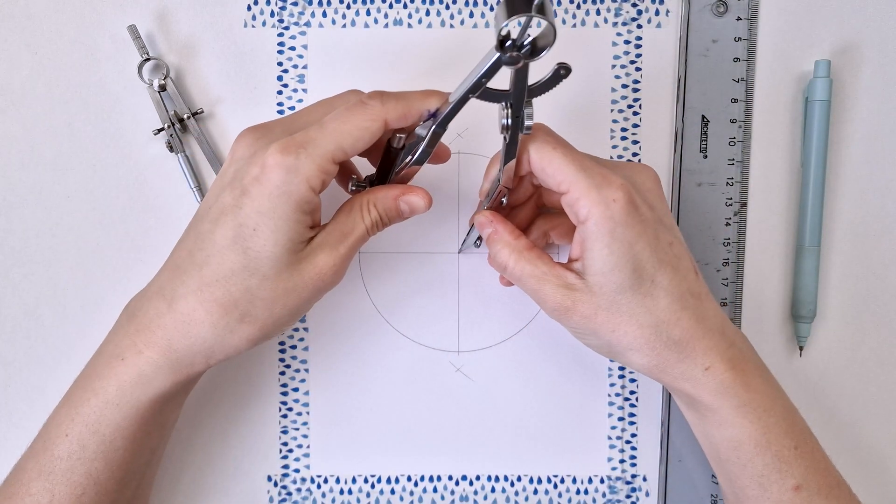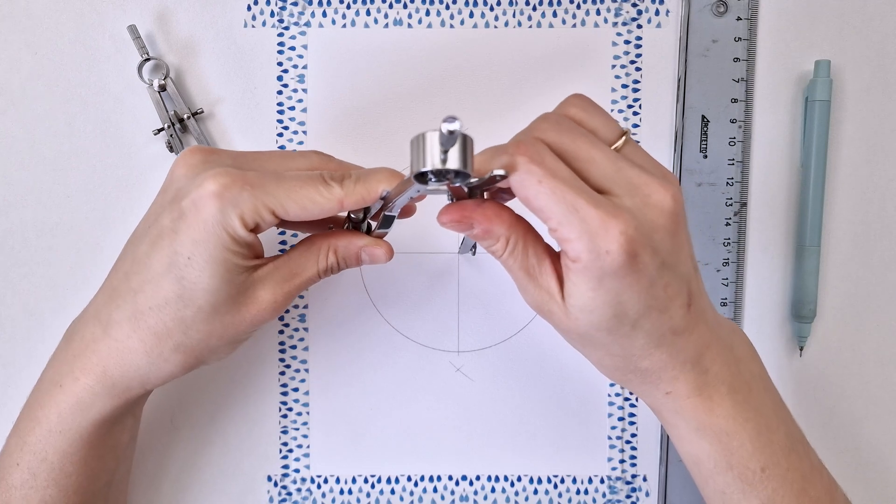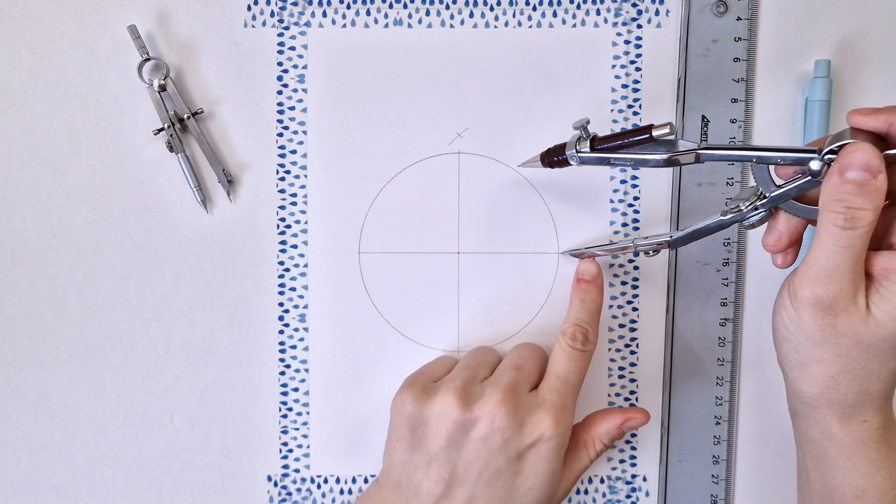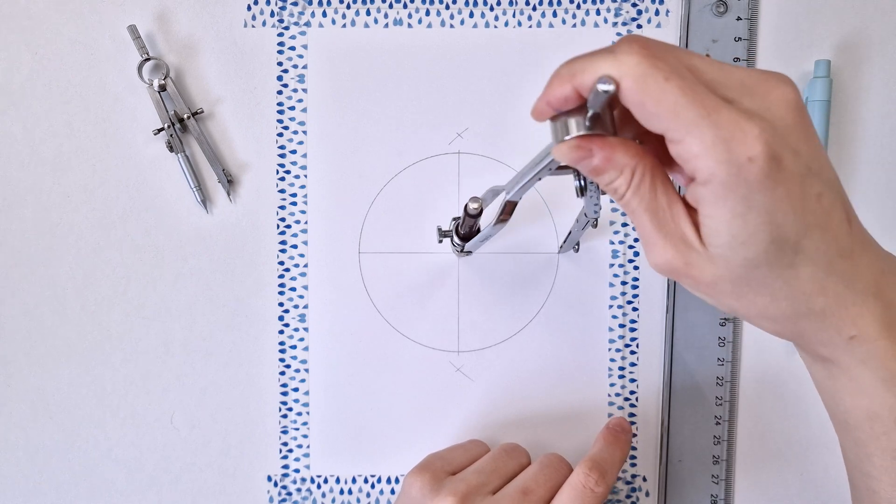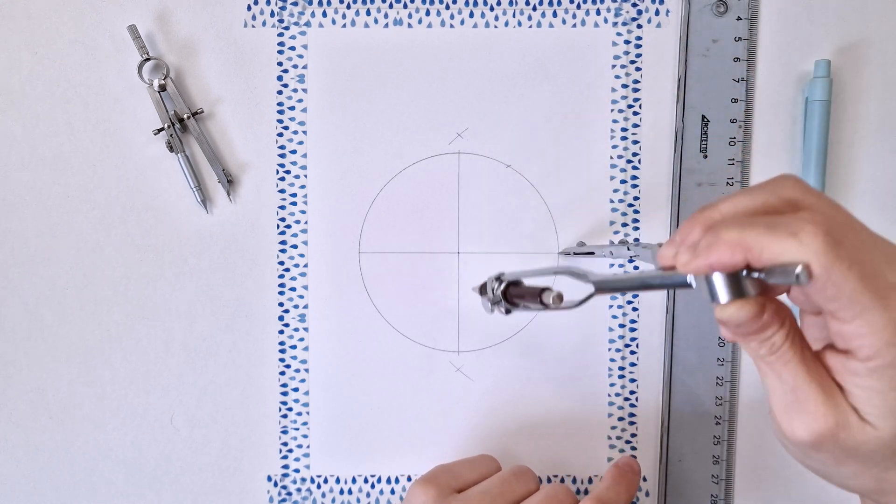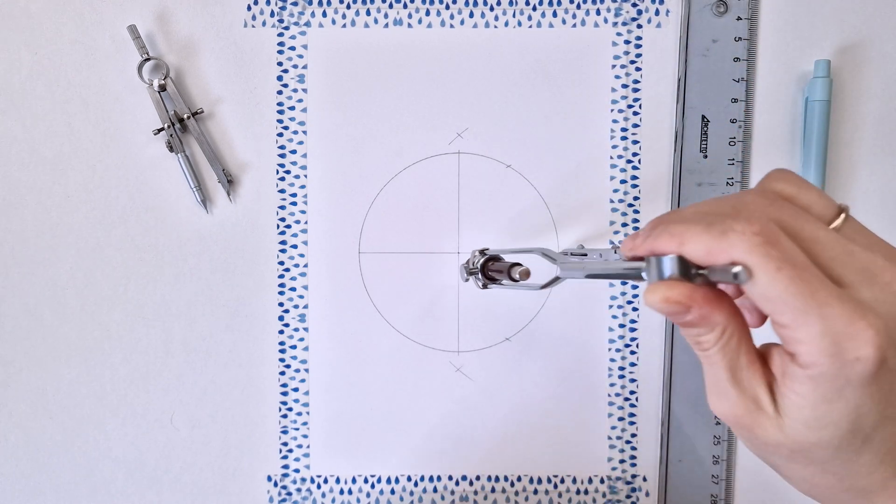Next, I'm going back to my initial radius and pointing the compass on this intersection. I'm going to make a mark on top and at the bottom, just like this.